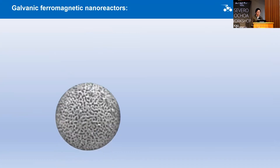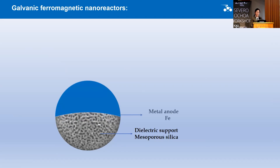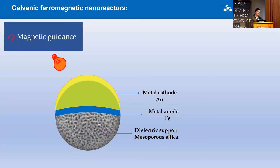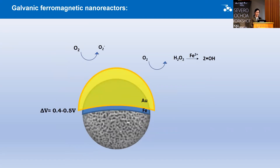The nanobattery contains a mesoporous dielectric support — specifically mesoporous silica particles — onto which we deposit an iron layer, which acts as the metal anode. Then we do a gold deposition, which acts as the metal cathode. The nanobattery can be triggered with light or magnetically guided. There is a potential difference because iron and gold have different work functions, and this triggers the oxidation of iron to Fe²⁺ — zero valent iron oxidizes and releases electrons.